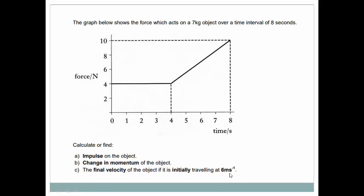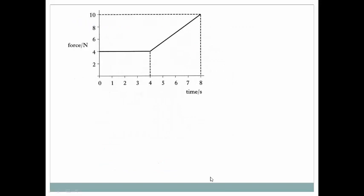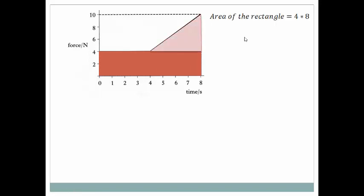So from the graph we can divide it into two sections: the bottom rectangle and the top triangle. Area of the rectangle 4 times 8, 32. Area of the triangle half base times height, so here 8 minus 4, 4, and here 10 minus 4, 6, so that will be 12.